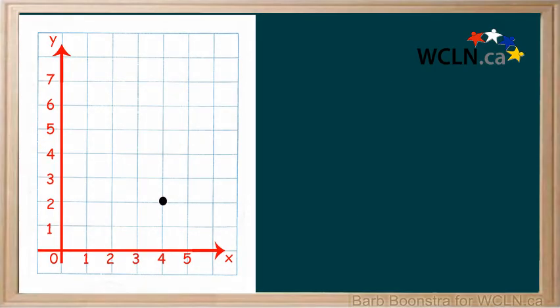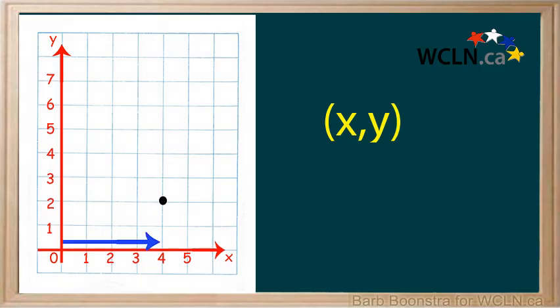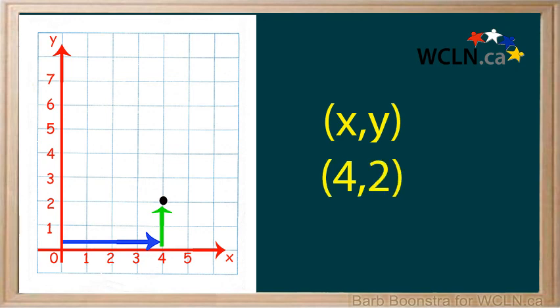What are the coordinates of this point? Remember that an ordered pair is in the order horizontal distance, then vertical distance. So the horizontal distance from the origin is four, and the vertical distance is two. So the coordinates of this point are (4, 2).